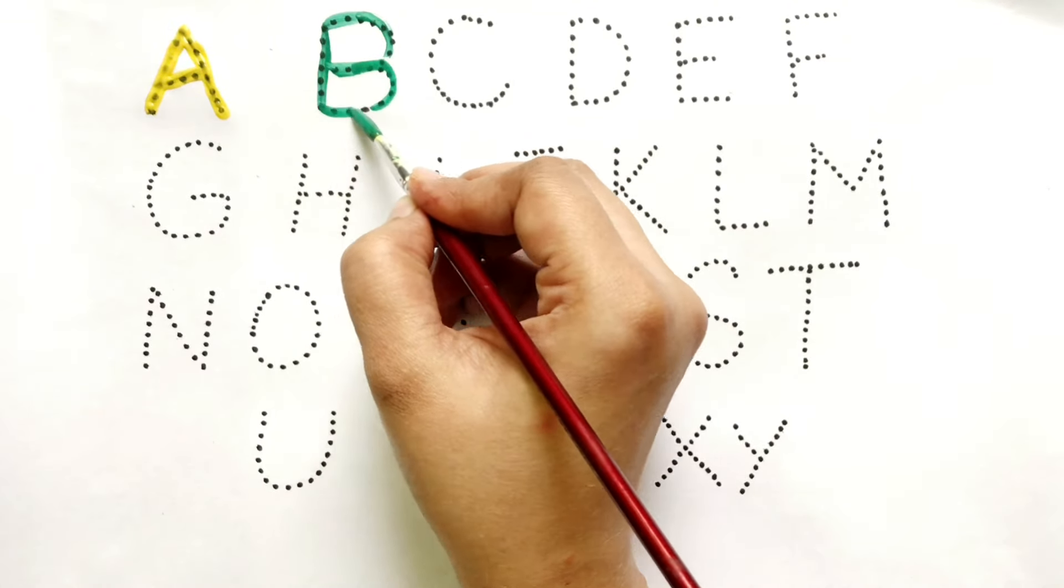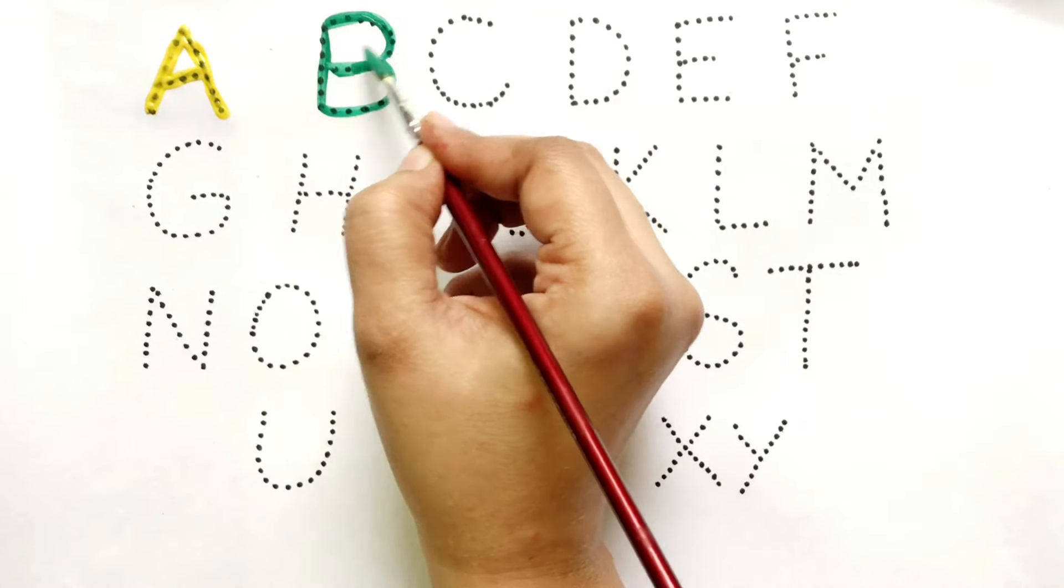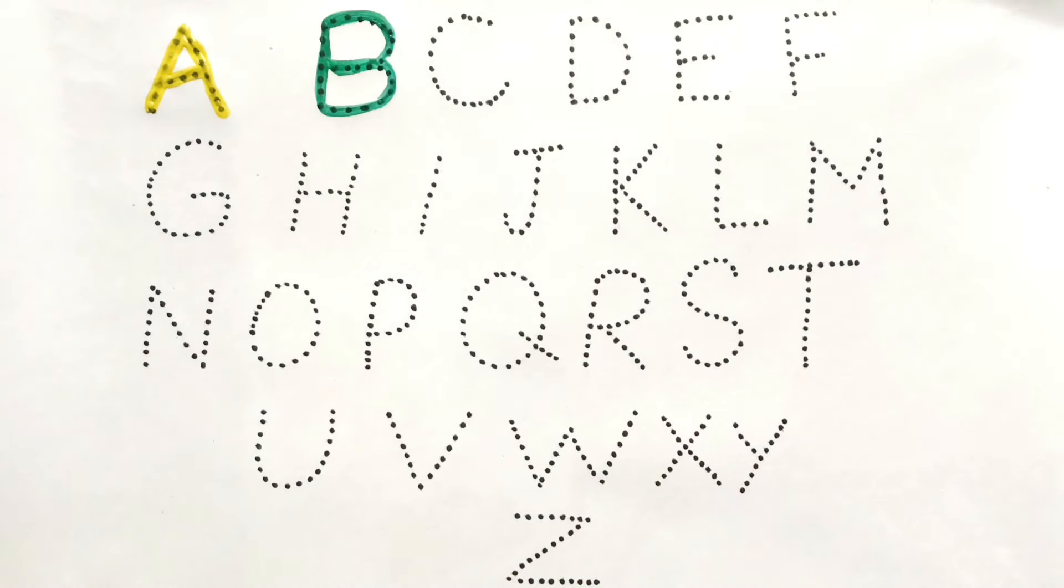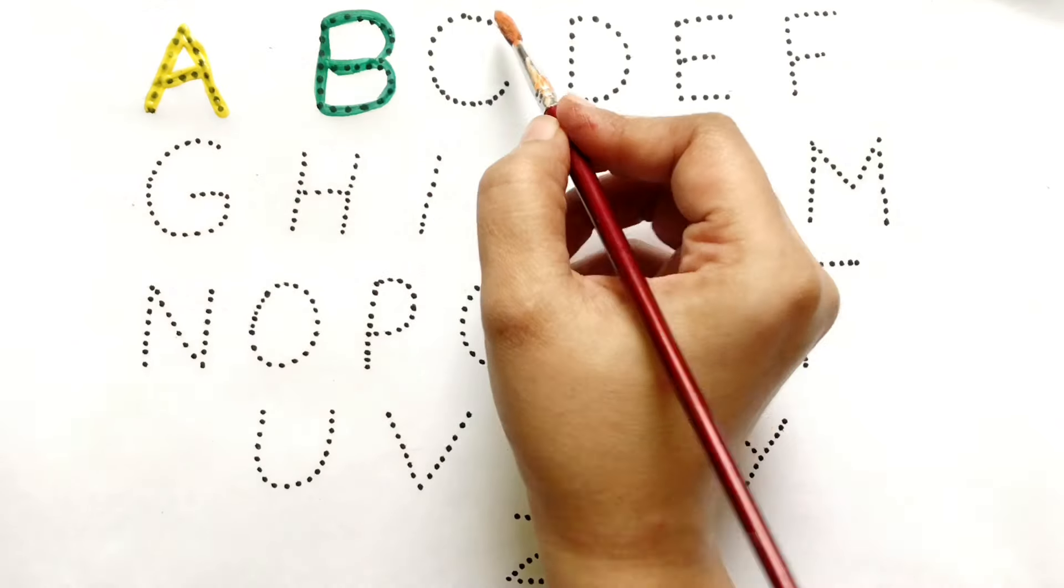B for butterfly. A, B, C, D, E, F, G, H, I, J, K.